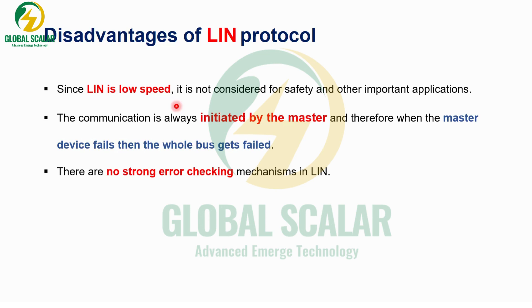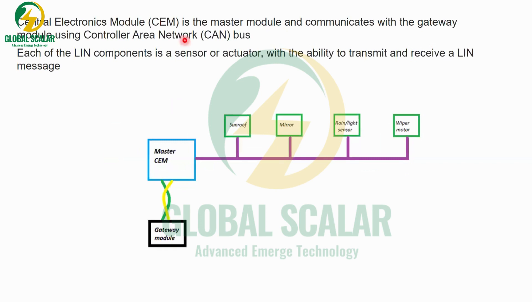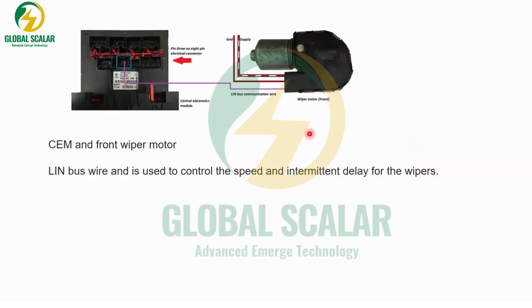In a real-time example, consider a Central Electronic Module (CEM) as the master. The CEM gateway passes information to sunroof, mirror, and other ECUs — all connected via LIN protocol to this one master ECU. These ECUs include all the sensors and actuators. From the gateway, it connects to the CEM and all peripheral nodes.